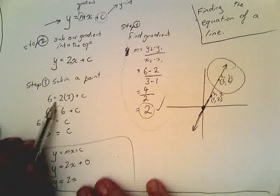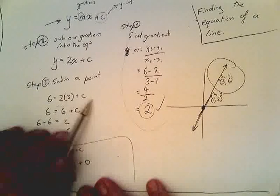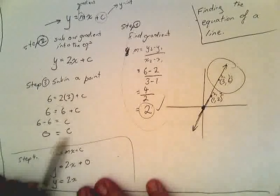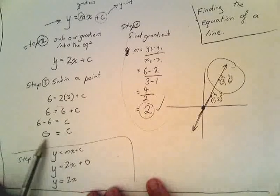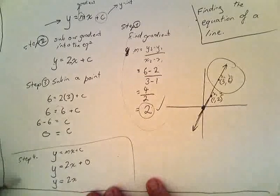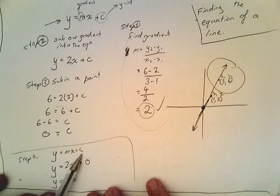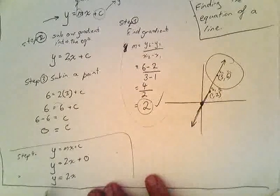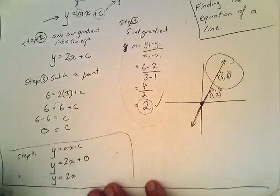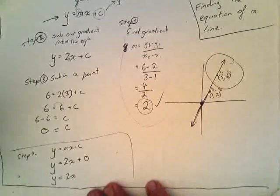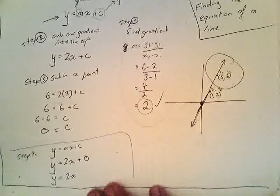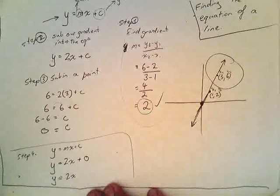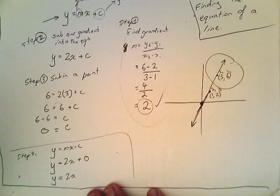So, 6 equals 2 times 3 plus c, and now we figure out what c was. In this particular special case, c was equal to 0. Step 4, putting your m value and your c value, and you finish off with an equation. In this particular case, y equals 2x. Okay, very important that you've taken all of those notes, you get yourself ready, and you start doing a few of these questions so you know you're getting them right. Alright, thanks a lot, guys.